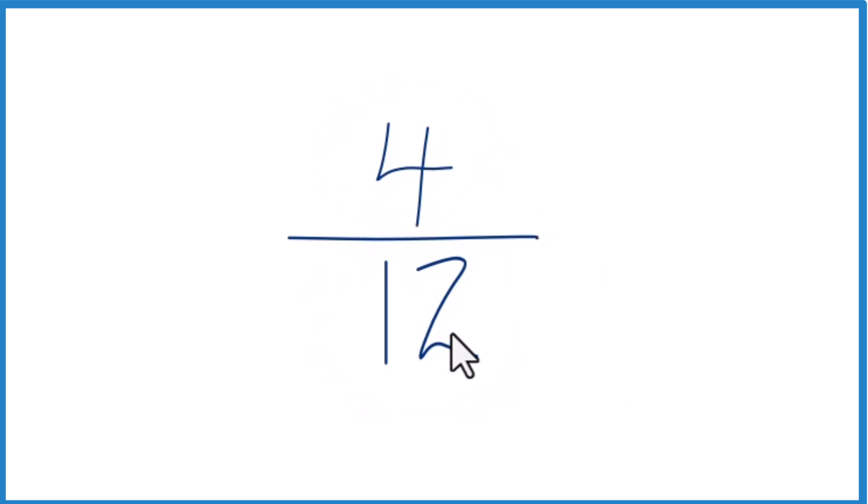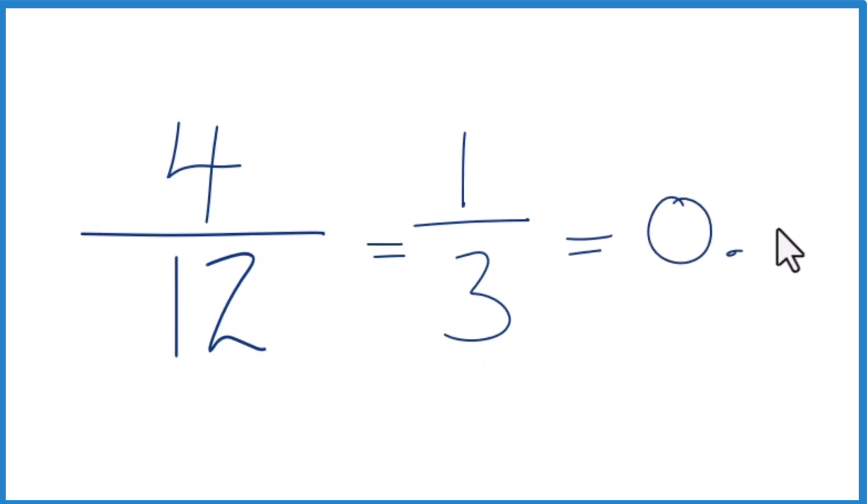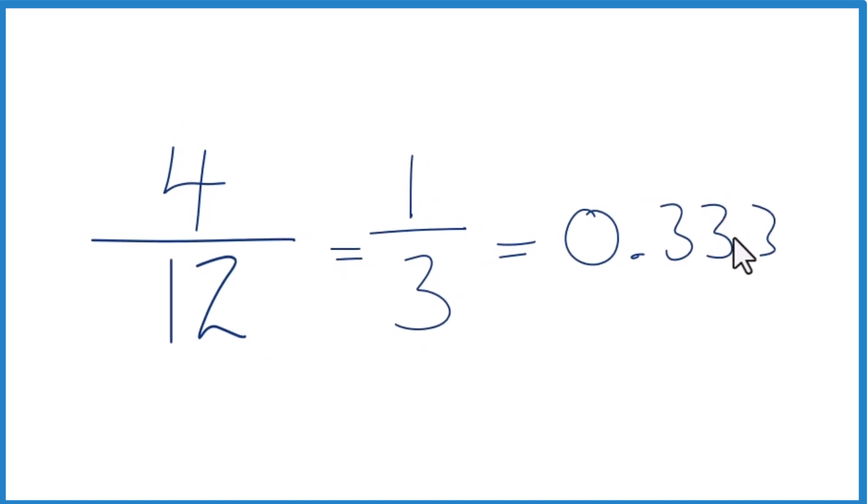We could simplify 4 twelfths because 4 goes into 12 evenly. So 4 divided by 4 is 1, 12 divided by 4 is 3. So it's 1 third, and you may know that 1 third is 0.333, those threes just keep repeating. So we could just put a bar over it like this.